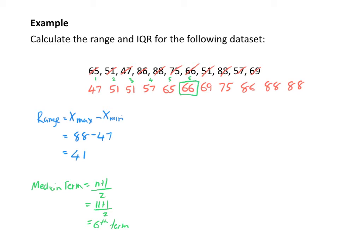When I split my data set into 2, because I've got an odd amount of numbers, I exclude the median. The numbers on my left become the first half, and the numbers on my right become the second half.